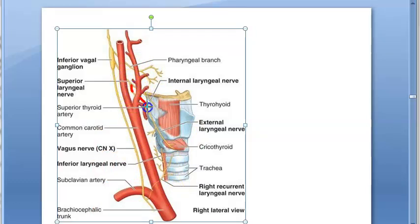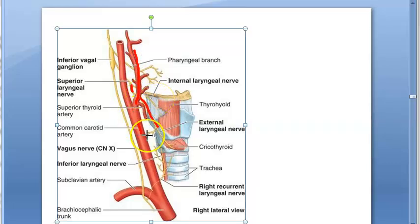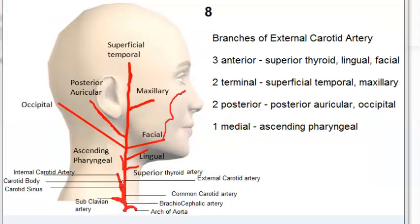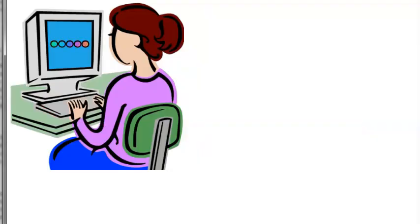Here you can see the external laryngeal nerve alongside the common carotid artery and the external carotid artery with its branches. The external carotid artery branches include superior thyroid, lingual, and facial arteries. Ligation of the superior thyroid artery can affect the external laryngeal nerve.